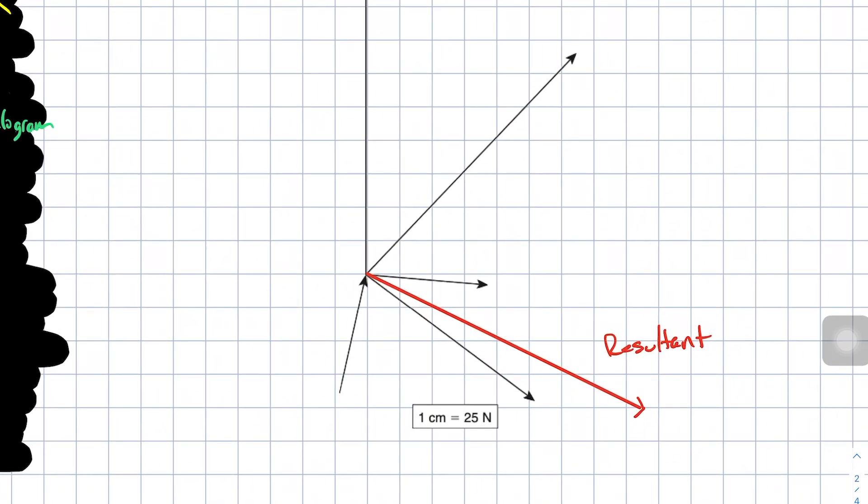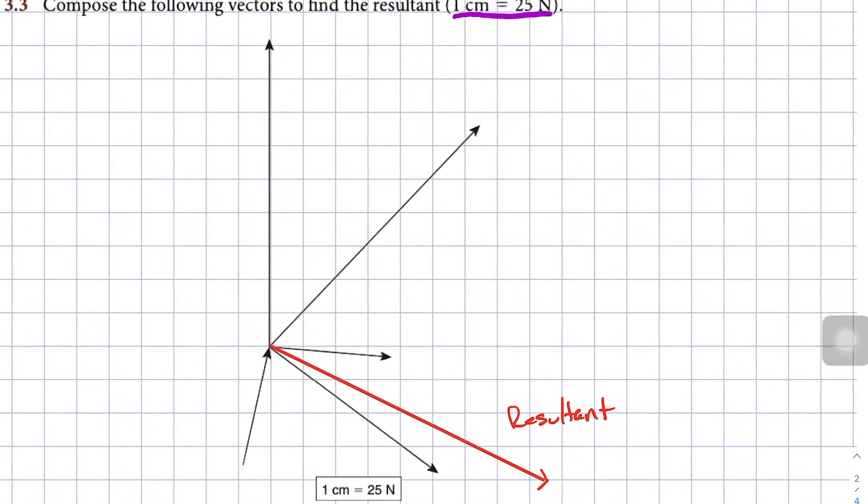But what I'm going to do instead is actually arrange these vectors so that they're in a chain, a vector chain from tail to tip or tip to tail. And once I create a chain out of all of them, then I'm just going to draw one big resultant and we'll see what we get. So I might actually run out of space here. So I'll probably have to reorganize this a little bit.